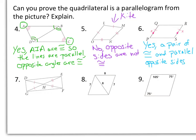For number 7, we have some diagonals marked congruent. However, they're not the same diagonal. So number 7 is a no, because our diagonals do not bisect each other — they're not cutting each other in half.